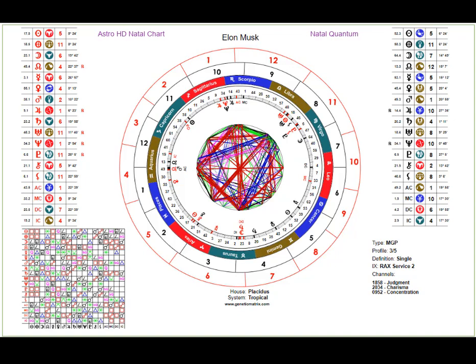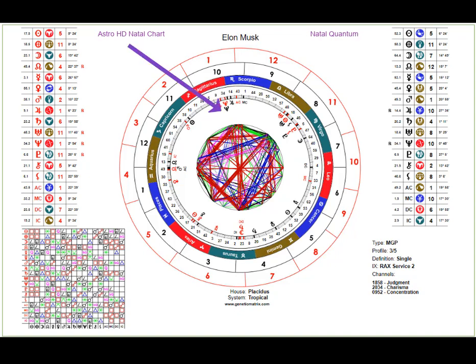Astrology is always displayed in a mandala format — a wheel representing the positions of the planets relative to the signs and houses. The red outer ring here shows the design houses, the black inner ring shows the personality or conscious houses, then come the signs of the zodiac, then the gates — the first reference to human design — then the lines within that particular gate.